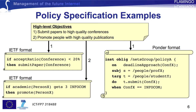According to the IETF format, the first one would be translated to the following condition-action rule: if the acceptance ratio of a conference is less than 20%, then papers should be submitted to that conference. The second objective would translate as follows: if person X gets three Infocom papers, then that person should be promoted.